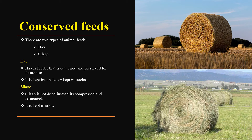Next, we have conserved feeds, and there are two types: hay and silage. Hay is cut, dried, and preserved for future use, while silage is not dried — instead it is compressed and fermented. Silage is stored in silos, while hay is kept in bales or stacks. You can check the two photos to identify which is hay and which is silage.